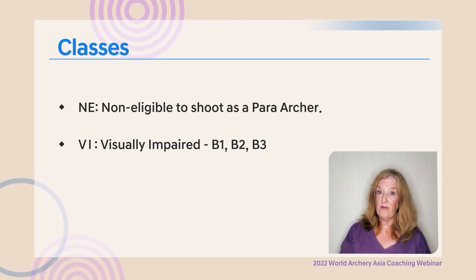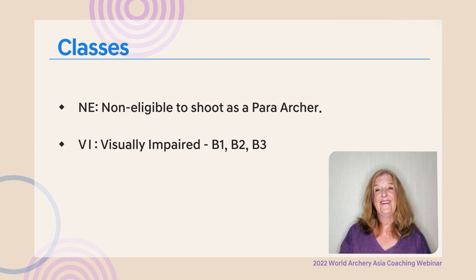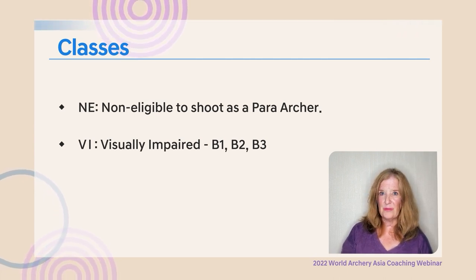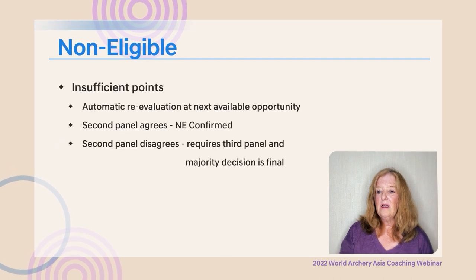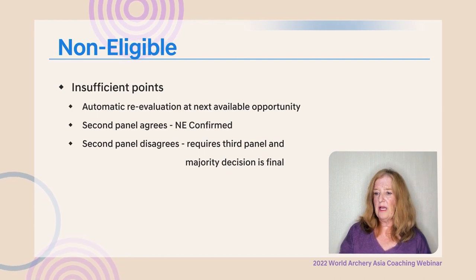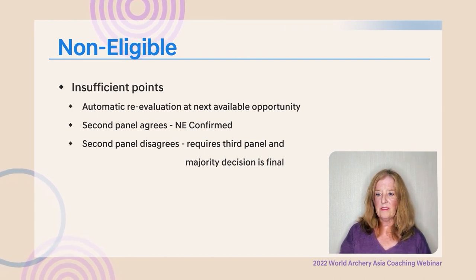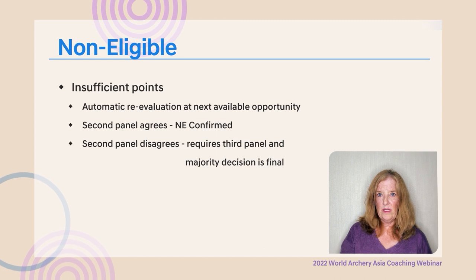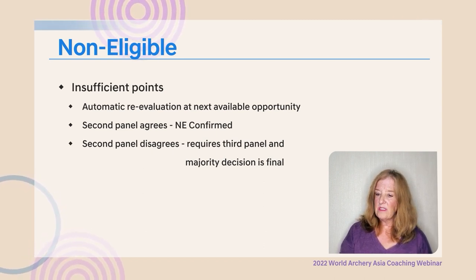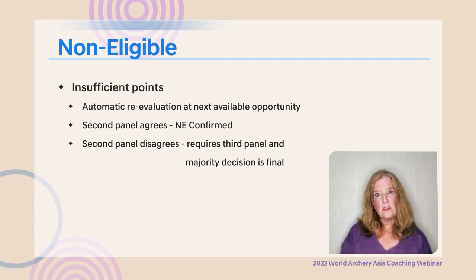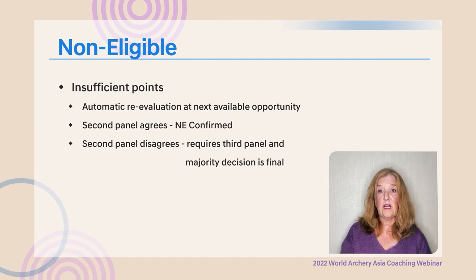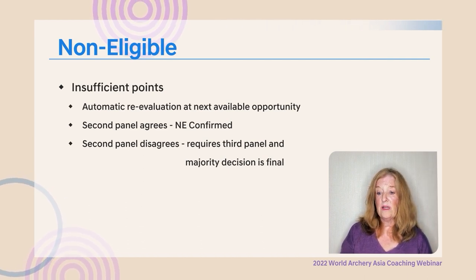The B classifications give us the B designation. Their divisions are VI1, and VI2 and VI3 shoot together. Non-eligible athletes have insufficient points and get an automatic re-evaluation at the next available opportunity. If the second panel agrees, the non-eligible status is confirmed. If the second panel disagrees, a third panel is required, and the majority decision is final.